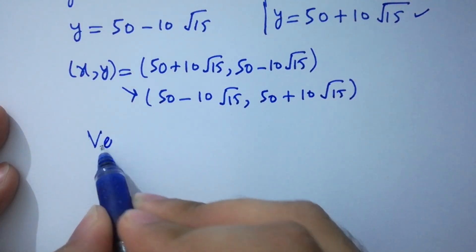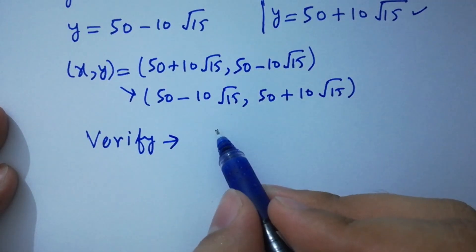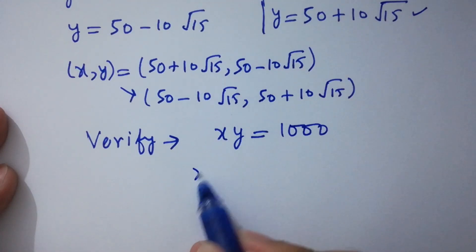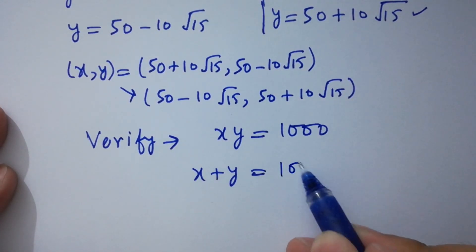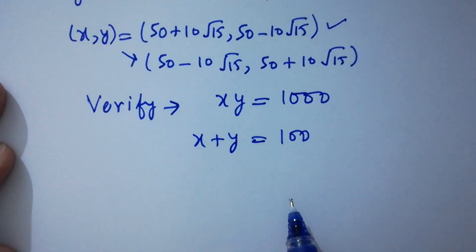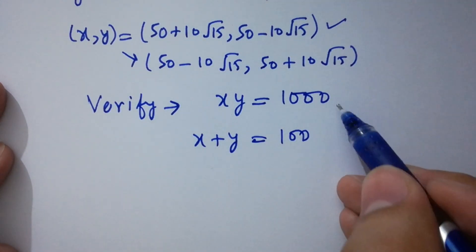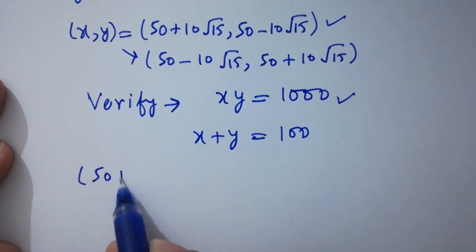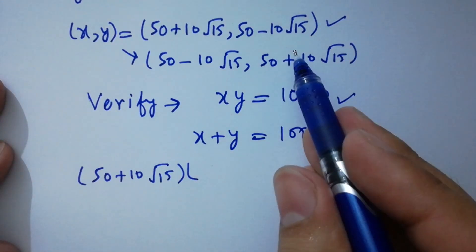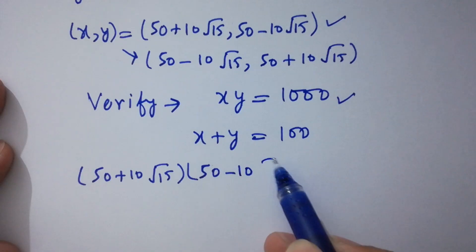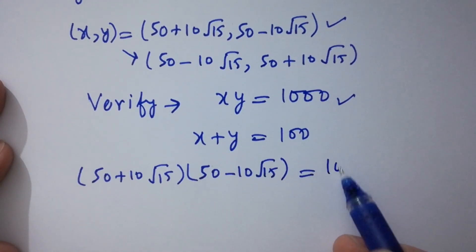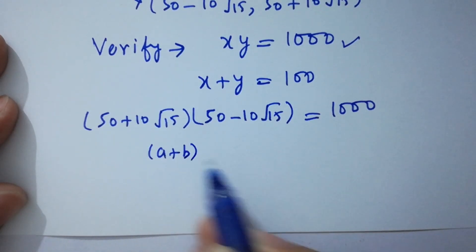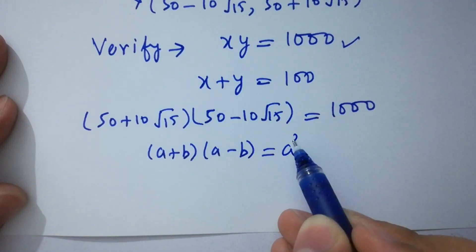Now verifying: xy equals 1000 and x plus y equals 100. For xy equals 1000, we put x equals 50 plus 10 root 15 and y equals 50 minus 10 root 15. This is in the form (a plus b)(a minus b), which equals a squared minus b squared.